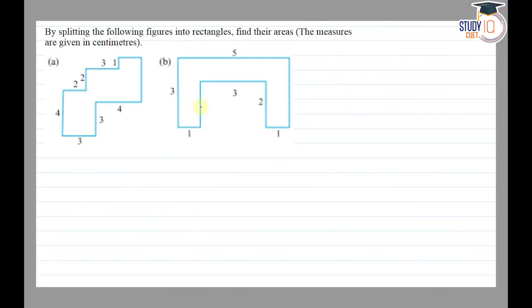Hello everyone. This question appears in the Classics NCERT Chapter of Mensuration. This is the 10th question of Exercise 10.3. The question says that by splitting the following figures into rectangles, find their areas. The measures are given in centimeters.